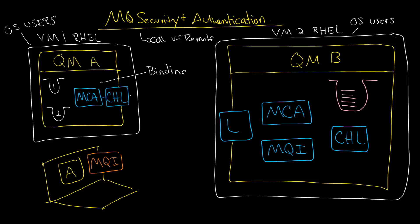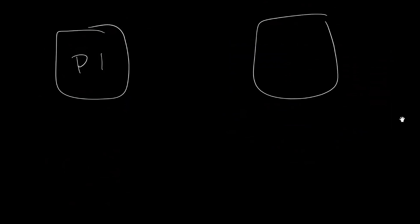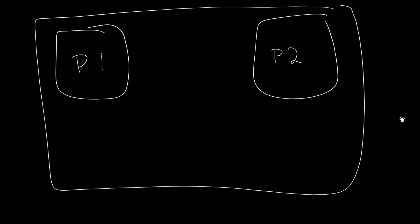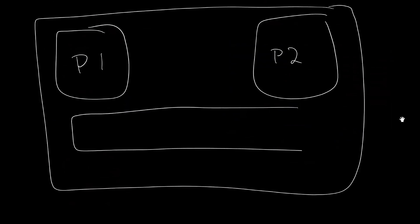Bindings simply means that the queue manager connections arrive over shared memory, as opposed to the network — that is a binding, sometimes called bindings mode. The way this works from a security standpoint is that the connections will share process IDs, or at least they will share the same memory. So if you have process one running here and process two running here, but they're both running on the same VM, then they're both able to connect to a shared set of RAM addresses. This is shared memory, and when they're shared like that, each can make a connection — that's how they're sharing the RAM.